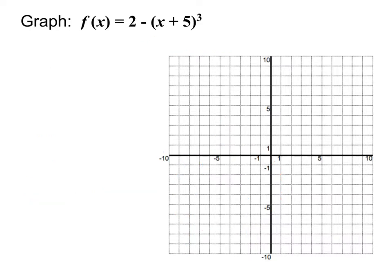Our next problem looks a lot like the last one. The only difference is that instead of being squared, this one is cubed. The only difference that makes is in our parent function: x cubed produces that S-shaped graph. That graph gets formed by cubing whatever number we go over. This is the same equation except cubed instead of squared, so all the transformations are the same — start left 5 and up 2.